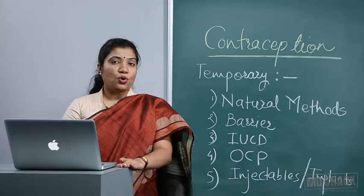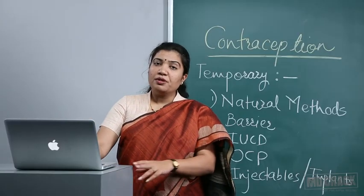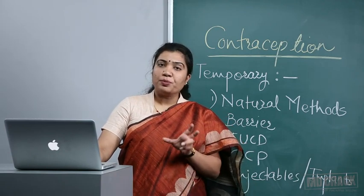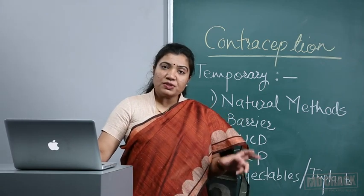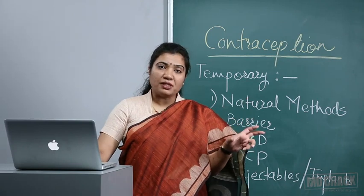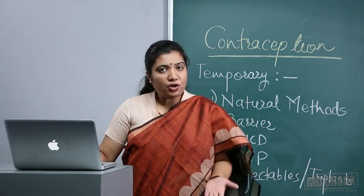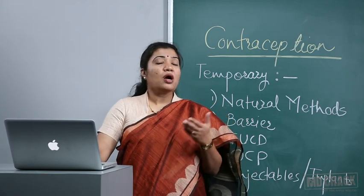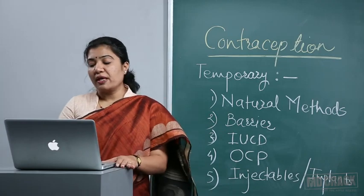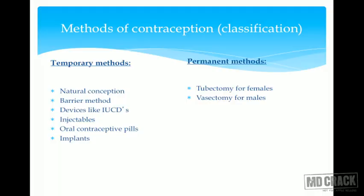Any contraceptive method's failure rate must be expressed per hundred woman-years — meaning 100 couples using that method over 12 months, and counting how many conceived. Methods of contraception are classified as temporary and permanent.